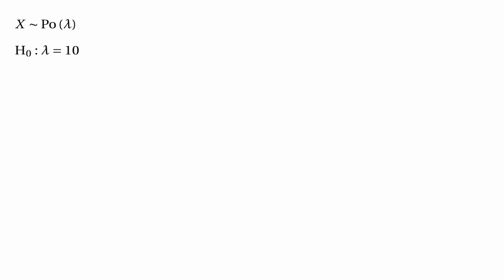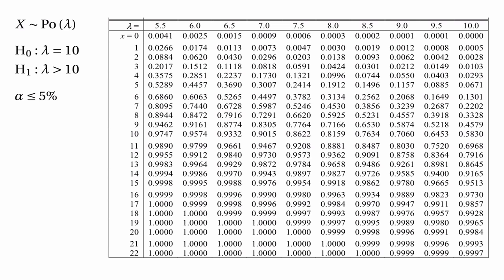Now let's look at a different example. We've still got a random variable with the Poisson distribution and the same null hypothesis that lambda equals 10. But this time we're testing against the alternative hypothesis that lambda is greater than 10. So we'd end up rejecting the null hypothesis if we get very large values of our random variable. We'll stick with trying to find a significance level as close as possible to 5%.